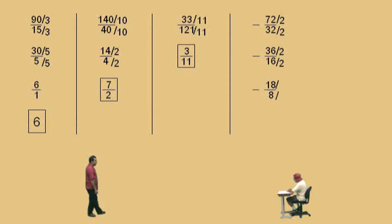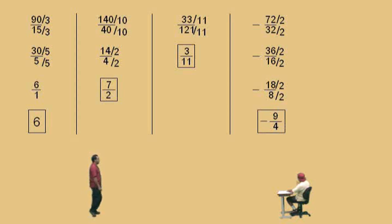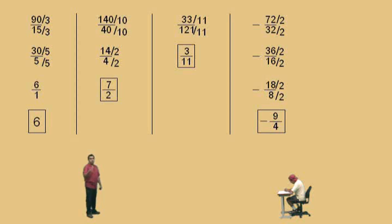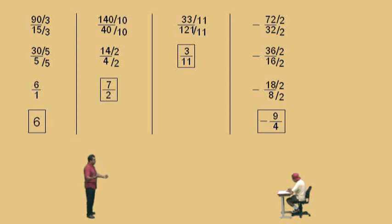Professor Perez: Now, again, we can divide by 2's. What's 18 divided by 2? Charlie: 9. And 8 divided by 2? Charlie: 4. Professor Perez: Very nice, there's our answer. Notice, we divided by 2, a 2, and a 2. Again, we could have done this problem in one step by dividing by 8. Or, you could have started by dividing by 4 and then a 2. So try the problems in different ways — try dividing first by 4 and then by 2, or just divide top and bottom by 8 and you'll get right to the answer.